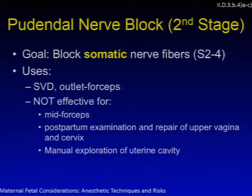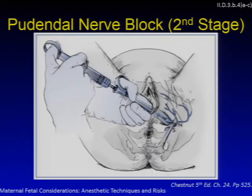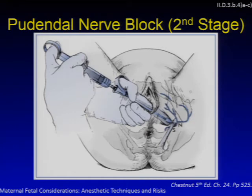A pudendal nerve block is most helpful for pain associated with the second stage of labor — it blocks somatic pain but not visceral pain of contractions and cervical dilation. It is most useful for normal vaginal delivery, outlet forceps delivery, postpartum examinations, and repair of upper vaginal or cervical lacerations. The needle passes through the sacrospinous ligament to reach the pudendal nerve, and local anesthetics should be dilute due to rapid maternal and significant fetal absorption. For pudendal and paracervical blocks, the obstetrician makes several blind needle punctures within the vagina, creating a significant risk for physician needle-stick injury.